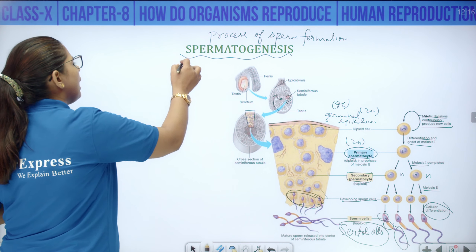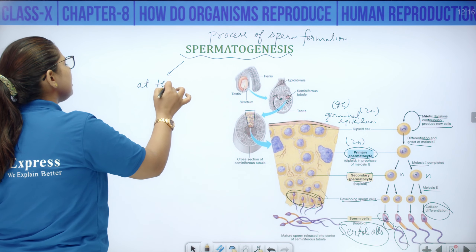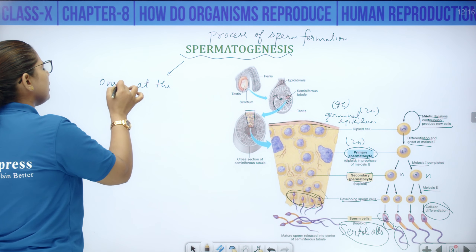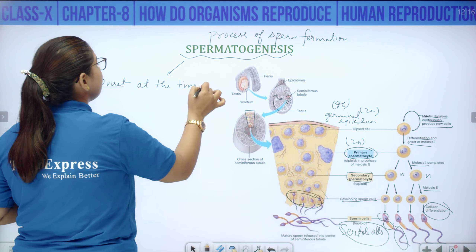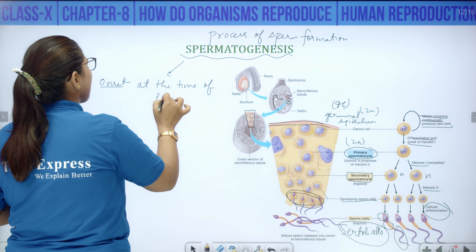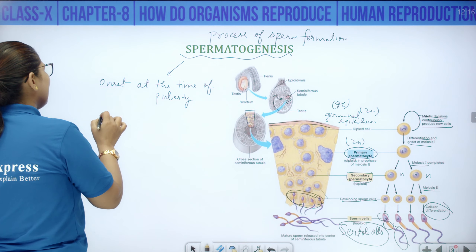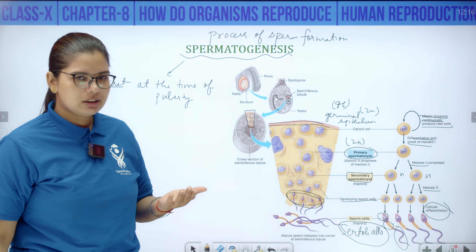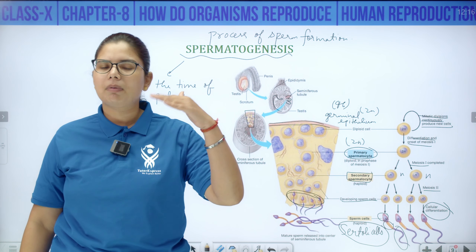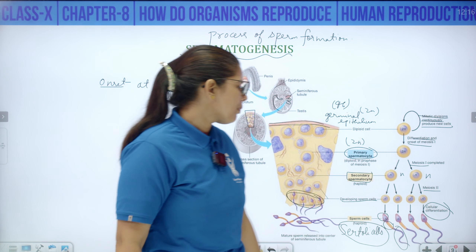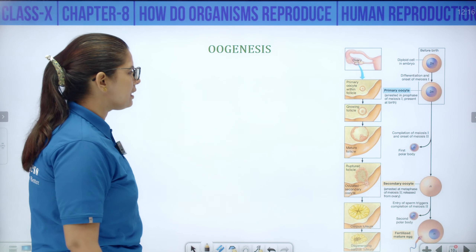Spermatogenesis starts at the time of onset of puberty and has no end — it is lifelong. Males, starting from puberty, can go on producing sperm till death. There is no cessation of spermatogenesis.